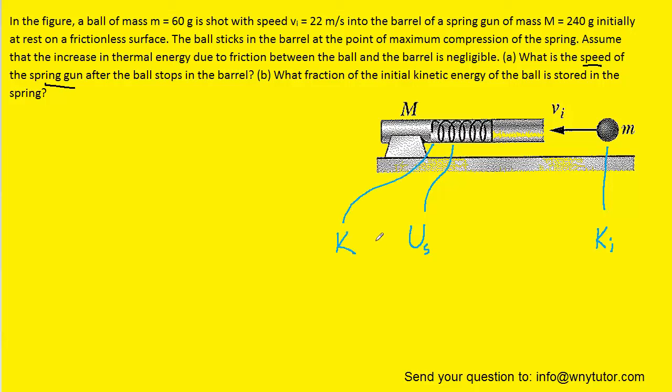Now the conservation of energy tells us that we can take the final energies and set them equal to the initial energy. And we're actually going to go ahead and solve for this elastic potential energy stored in the spring. So we'll go ahead and subtract the final kinetic energy over to the right hand side. And then we know that kinetic energy can be represented as one half times the mass times the initial speed squared.